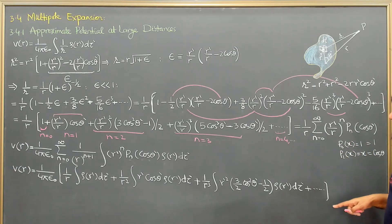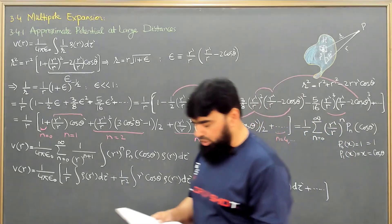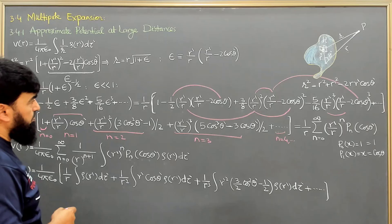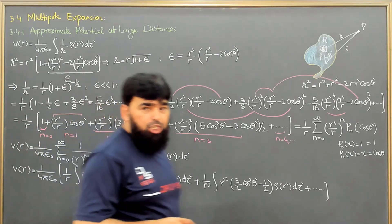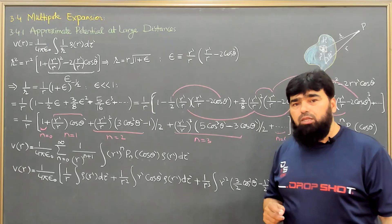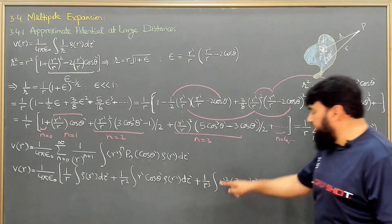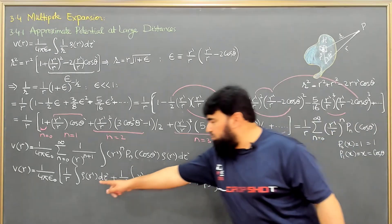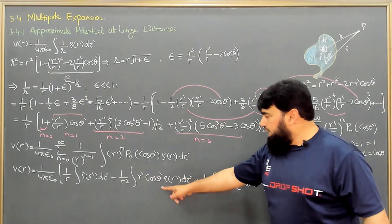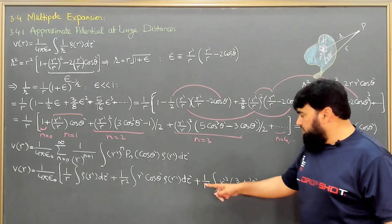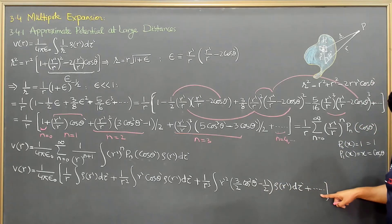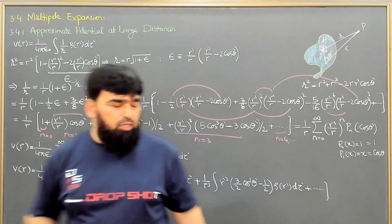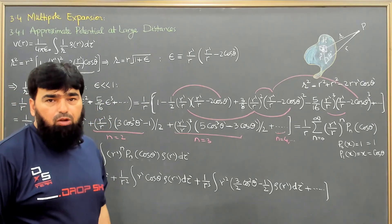So, in the form of Legendre Polynomials, we have derived the expansion of the potential. As the geometry changes, the potential falls off more rapidly. The monopole potential falls as 1/r, the dipole as 1/r squared, the quadrupole as 1/r cubed, and the octopole (eight dipoles together) as 1/r to the 4th.